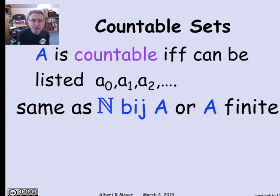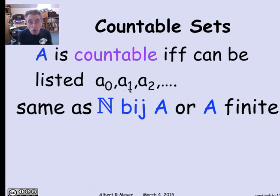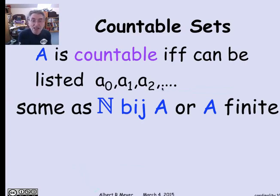The technical definition of A as countable is if there's a bijection between A and the non-negative integers, because this listing is really a mapping from the non-negative integers to A: 0 maps to a0, 1 maps to a1, 2 maps to a2, and implicitly there's a bijection being indicated here.